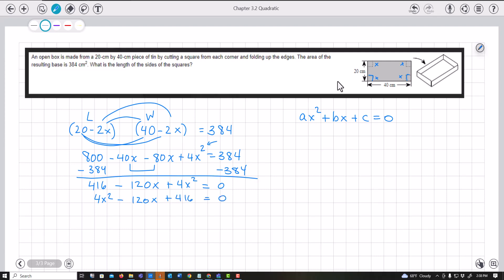All of these are divisible by 4, which will make it easier to factor. Dividing by 4 gives X² - 30X + 104 = 0.